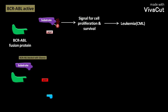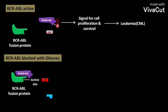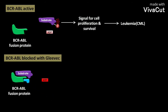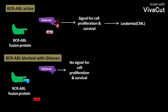When a CML patient's BCR-ABL fusion protein is blocked with Gleevec (imatinib), the fusion protein binds to its substrate, but the drug Gleevec occupies the active site. As a result, ATP cannot bind to the active site, and the BCR-ABL fusion protein cannot transfer a phosphate group from ATP to the tyrosine residue in the substrate.